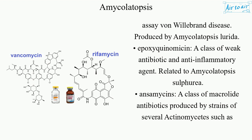Epoxyphoromycin is a class of weak antibiotic and anti-inflammatory agent, related to Amycolatopsis sulfurea.